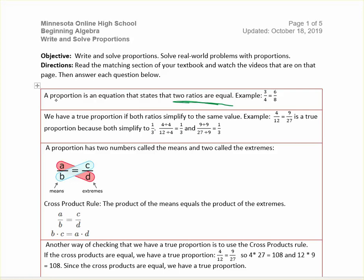There are a couple different ways to make sure that we have a true proportion, that is, that both ratios are equal to the same value. One way is to simplify each of your ratios to its simplest form and see if it's the same ratio. So 4 over 12, we can simplify that by dividing both the 4 and the 12 by their greatest common factor, which is 4. So 4 divided by 4 is 1, and 12 divided by 4 is 3, so we get 1 third. Then I'm going to simplify 9 over 27 the same way. Its greatest factor would be 9, so 9 divided by 9 is 1, and 27 divided by 9 is 3. So these are the same, they are equal ratios, so that means my proportion is true. That's one way to check if you have a true proportion.